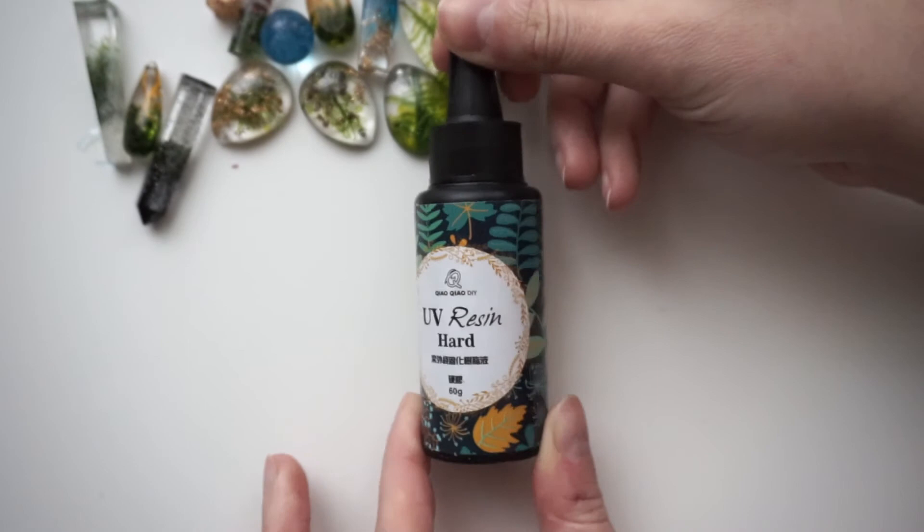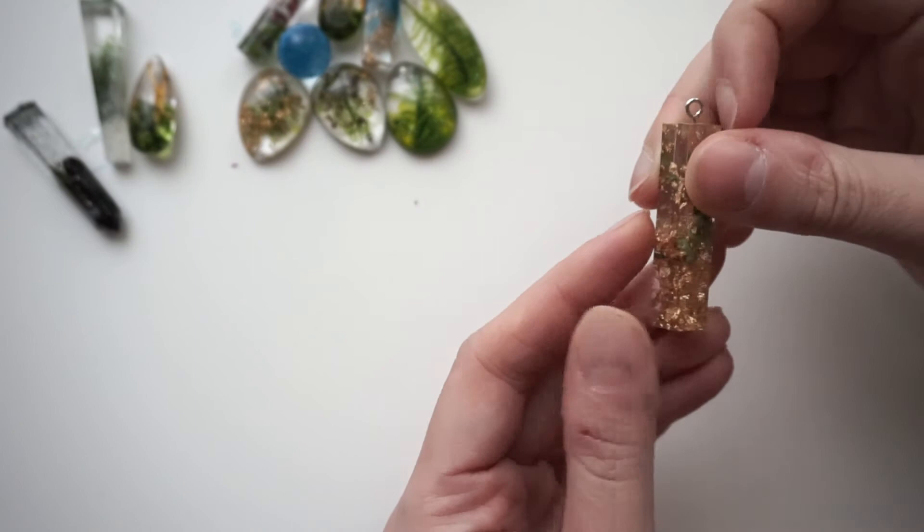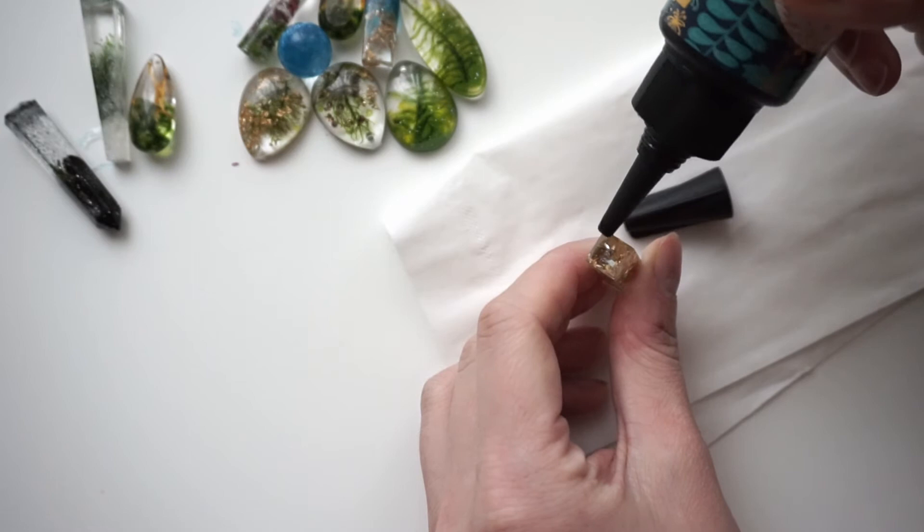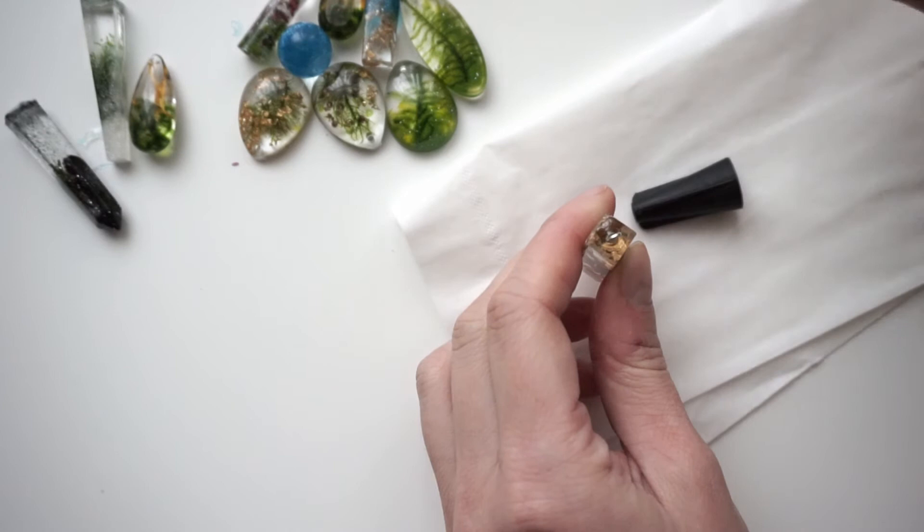And now if we need to fix something we can do that with UV resin. For example here the resin created kind of a dimple as it dried and shrank. So I'm gonna fill that in with the UV resin. I use a toothpick to spread it out very carefully so it does not drip on the sides of the pendant.